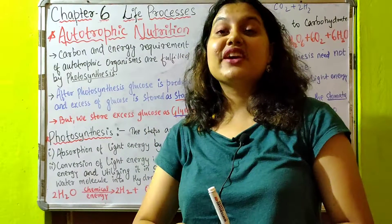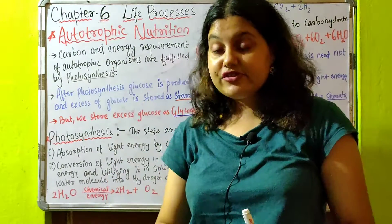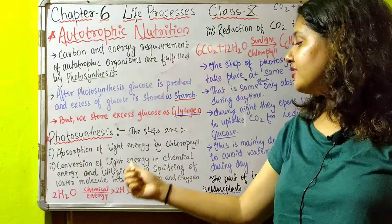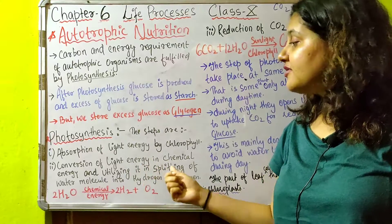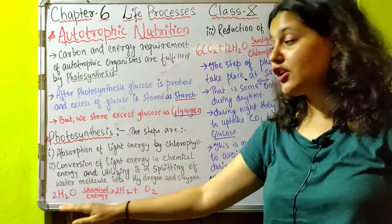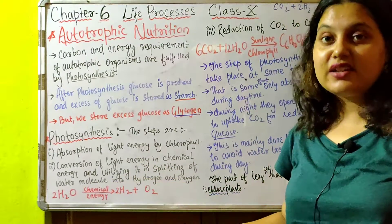The next step is conversion of light energy to chemical energy. After chlorophyll absorbs the light energy, that light is converted to chemical energy, and that chemical energy is utilized in splitting of water molecules into hydrogen and oxygen.